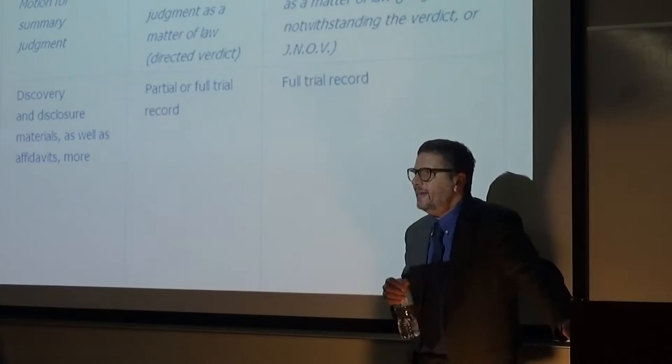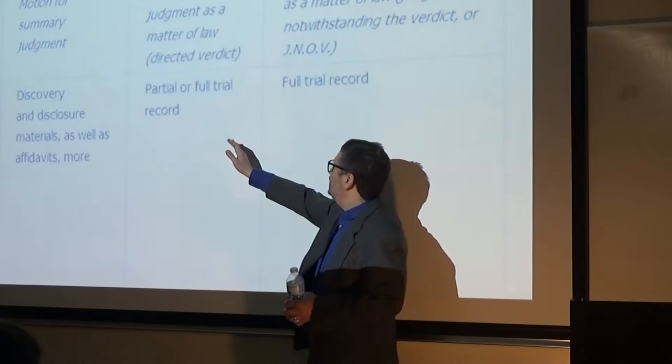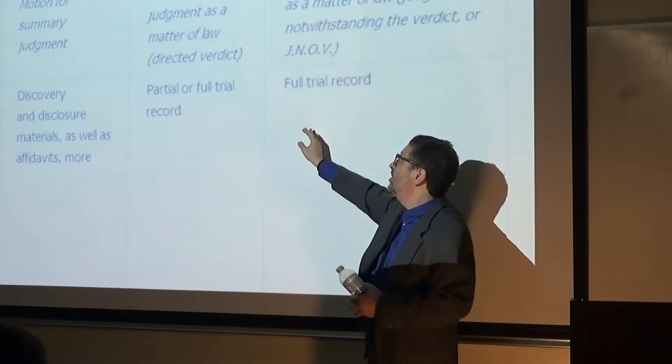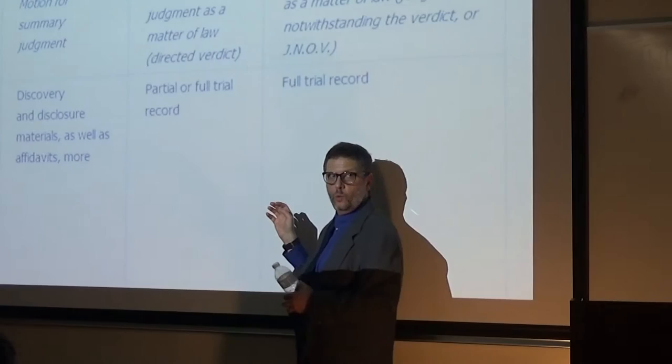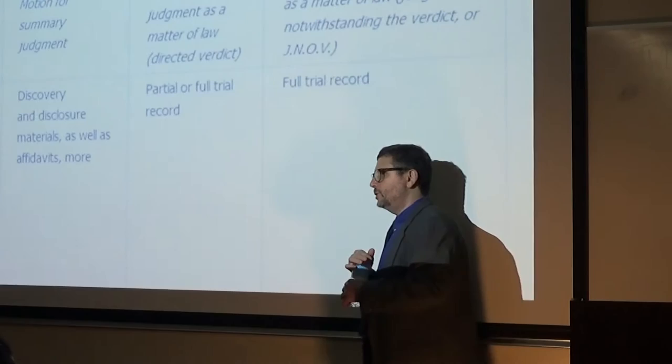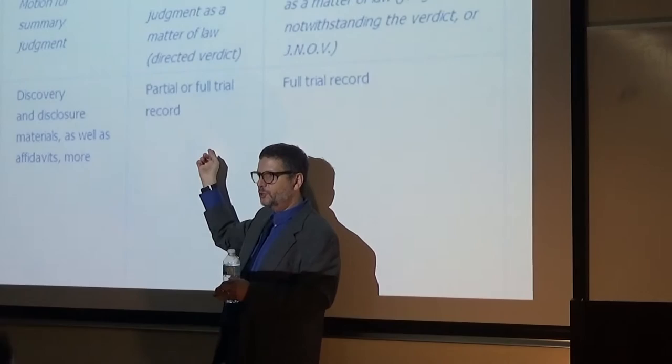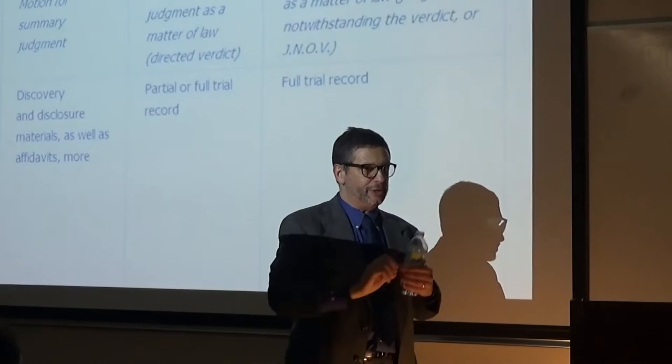With Rule 50, trial is actually going on. Rule 50A is during trial but before the jury goes to deliberate. Rule 50B is after the jury has come back with a verdict. So you have judgment as a matter of law — also known more commonly as directed verdict — or a renewed motion for judgment as a matter of law, more commonly known as a JNOV motion, judgment notwithstanding the verdict. Here we're not looking at what might be used at trial; we're looking at what was actually used at trial: testimony and documents entered into evidence.